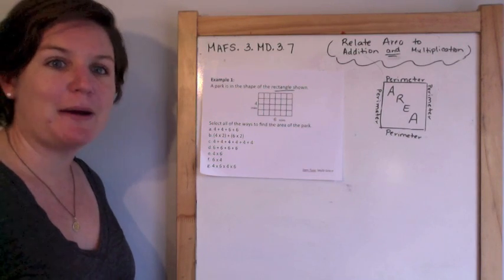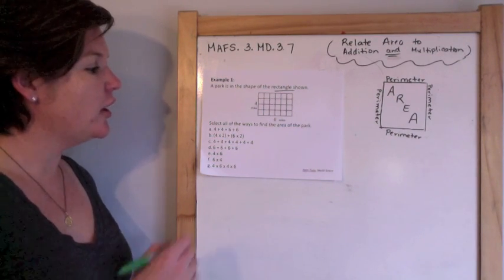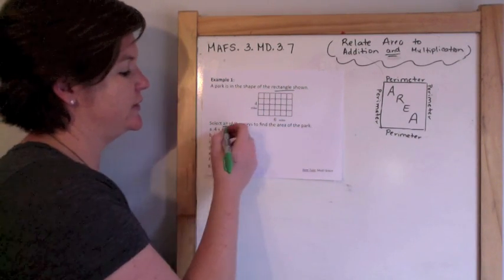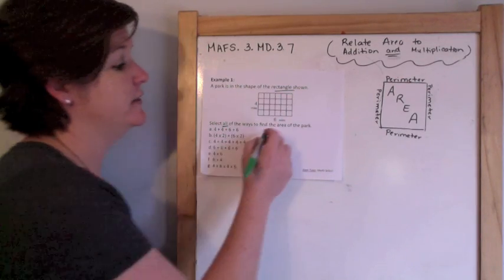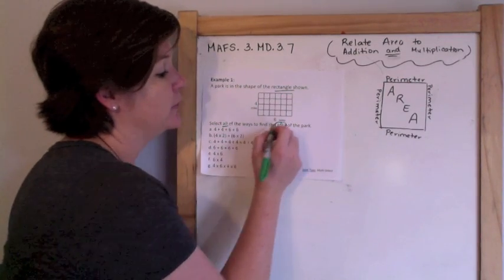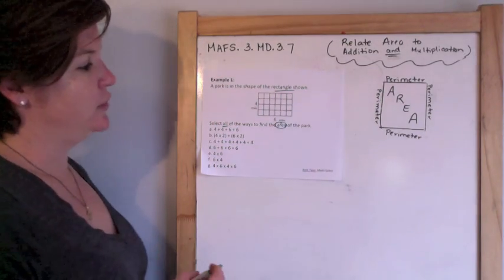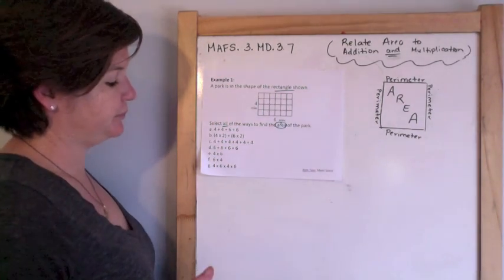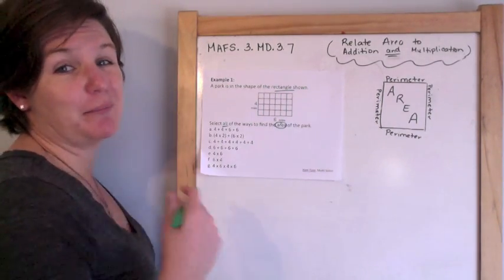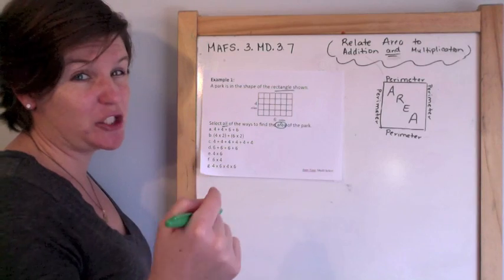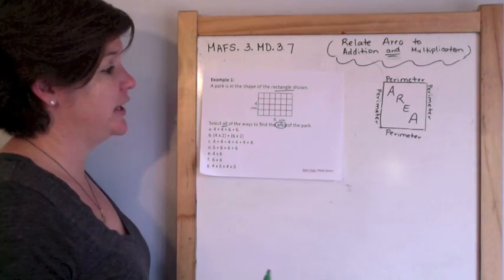Select all the ways — this is a multi-select — to find the area, not the perimeter, but the area of the park. I could count all of them, but that's not my focus for this standard. I want to relate addition and multiplication.